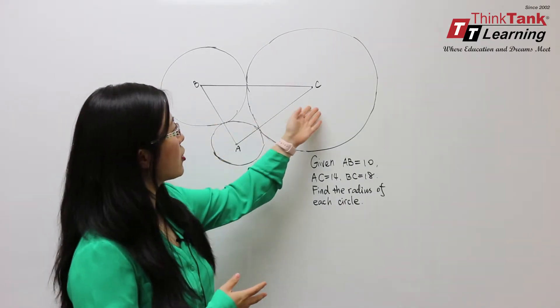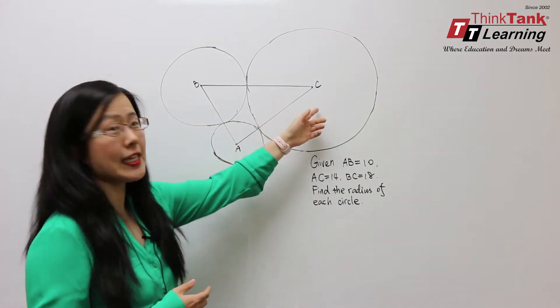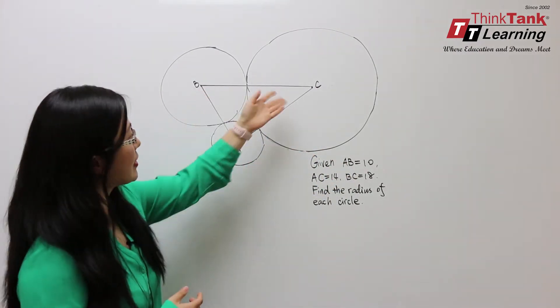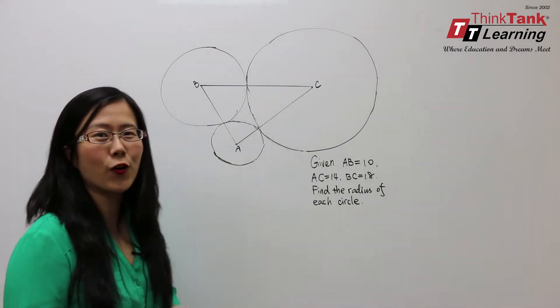I have three circles given AB equals 10, AC equals 14, and BC equals 18. The problem is find the radius of each circle.